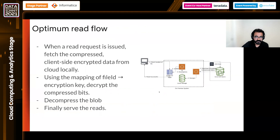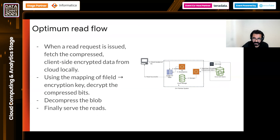For a read, you always want to read from your on-premise system first. Only if the content is not present — due to eviction or a cold start — do you fetch from cloud and hydrate your on-premise system. On a cold start, you check the file's location in cloud storage, fetch the encrypted and compressed object, first decrypt it and store it in local storage as compressed bits, then decompress the data and mark the read successful. Subsequent read requests will be served from local storage since it's already hydrated.